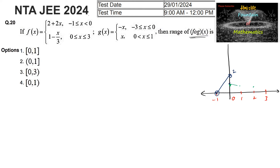So we can see the graph is coming down. The values are 2 by 3 and 1 by 3, and here is a point 1 comma 2 by 3.